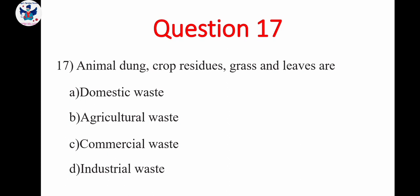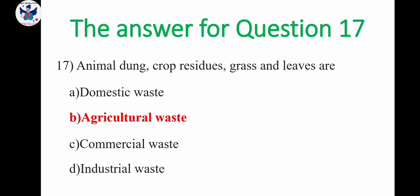Next, question 17. Animal dung, crop residues, grass and leaves are A, domestic waste, B, agricultural waste, C, commercial waste, D, industrial waste. So here the animal dung, crop, grass, everything is coming. So definitely the answer will be agricultural waste.